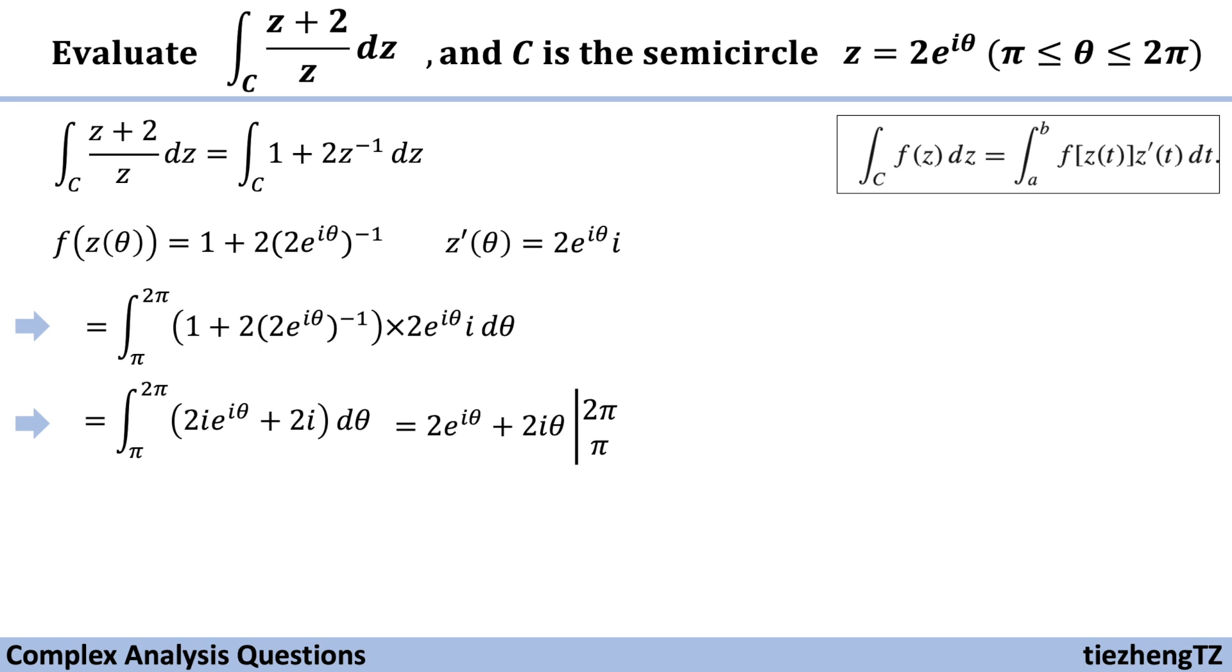And we need to find its anti-derivative, which is 2 times e to the power of i theta plus 2i times theta. And we are going to evaluate using the bounds pi to 2 pi.